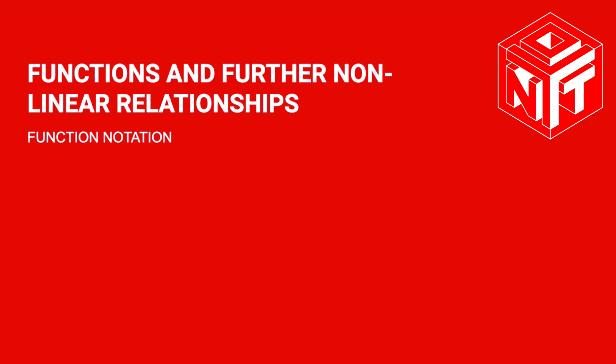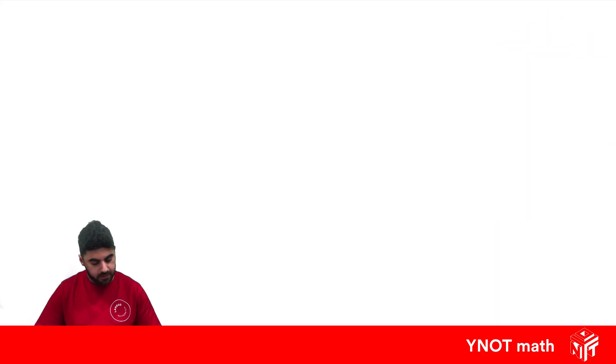Function notation. We're used to seeing a function looking like this, y equals x squared. Here we're going to learn a new way to write it. So instead of y, we can write f(x) equals x squared.